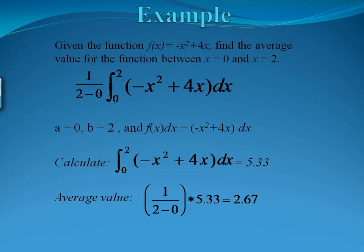So the average value will be 1 over 2 minus 0 times the area under the curve, which gives us an average value of 2.67. That's our final answer for average value.